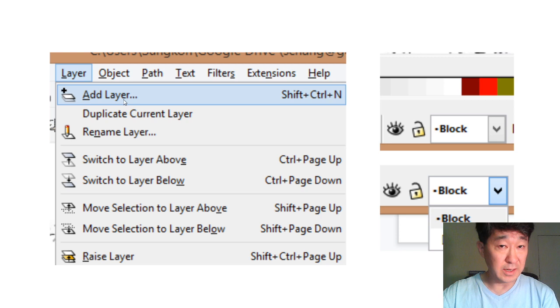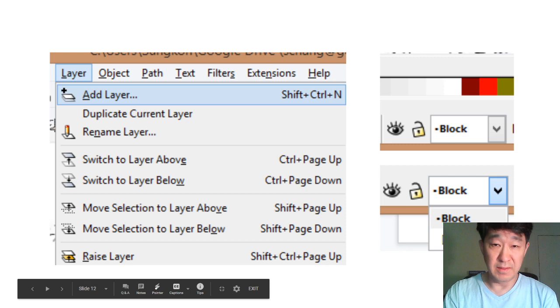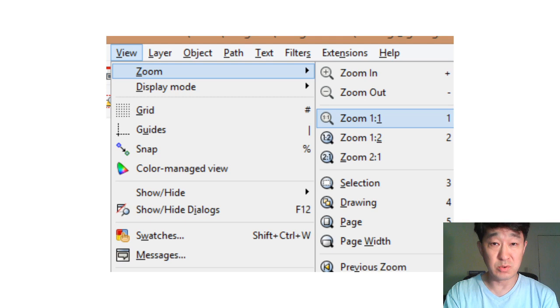Then we want to add layer, where we're going to create this block. So go to layer, and add layer. And once you add layer and name it, I named it block. Then, if you click on this arrow, you can see there's a block, and then lock layer was created.